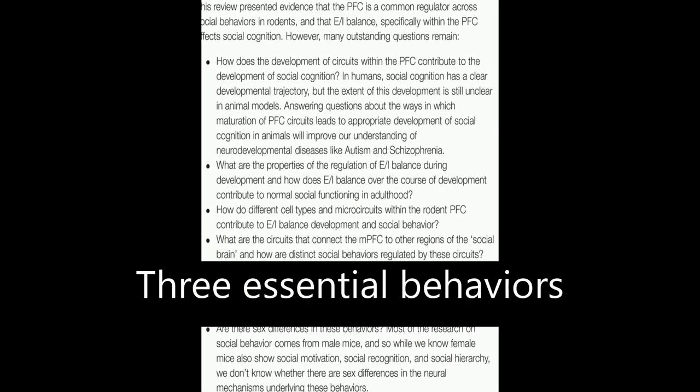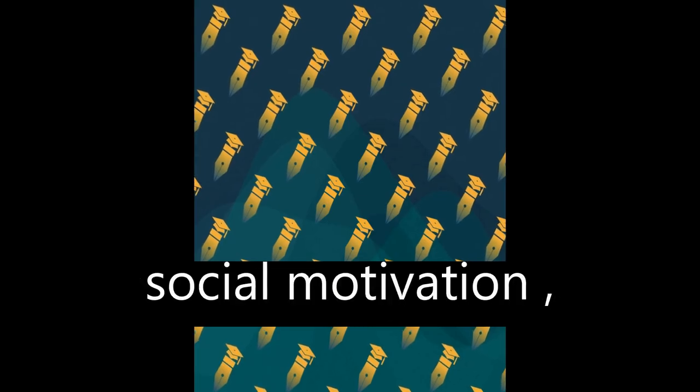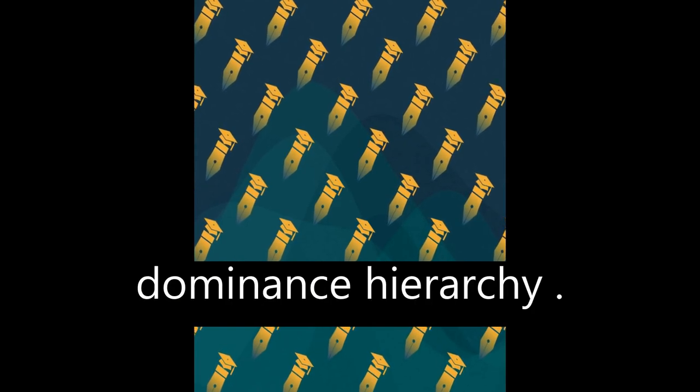Three essential behaviors for normal social processing in rodents and humans are discussed: social motivation, recognition, and dominance hierarchy.